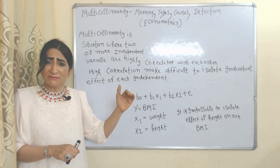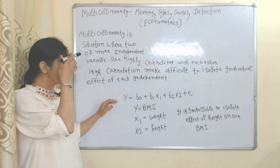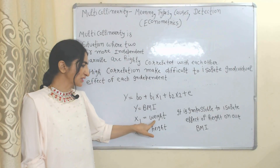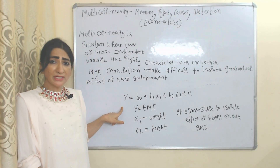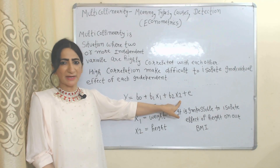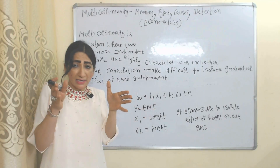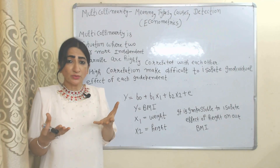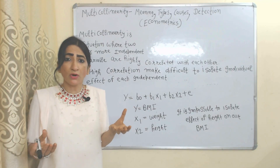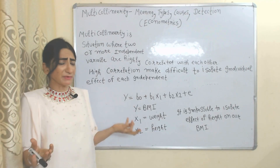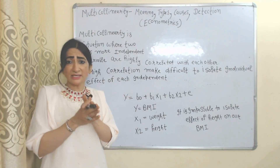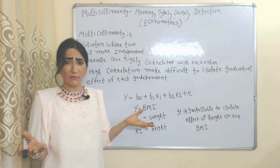For example, Y is our dependent variable — body mass index. X1 and X2 are independent variables: X1 is weight and X2 is height. Body mass index depends on weight and height. Since weight and height are highly correlated with each other, it is very difficult to know the individual effect of weight or height on body mass index, which creates the problem of multicollinearity.